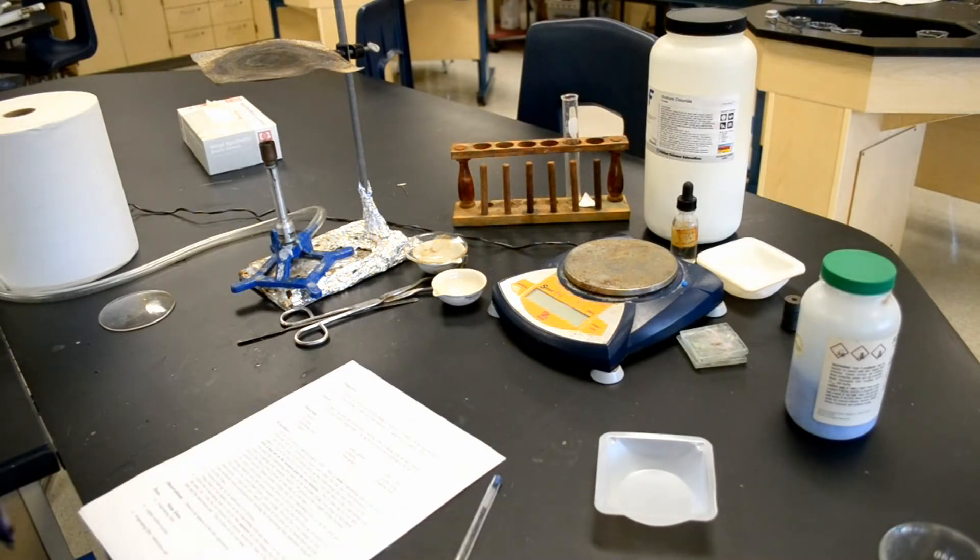The materials used in this lab include a balance, a hot plate, or in this case a Bunsen burner, an evaporating dish, hot hands, safety glasses, a scrupula, watch glass, copper sulfate X hydrate, crucible tongs, and a weighing bolt.